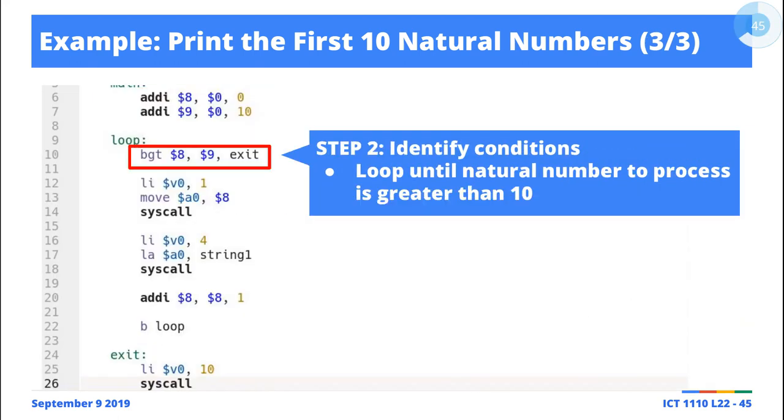So step number two is we identify the conditions. Our condition is pretty simple because we know that we want to print 0, 1, 2, 3, all the way up to 10.